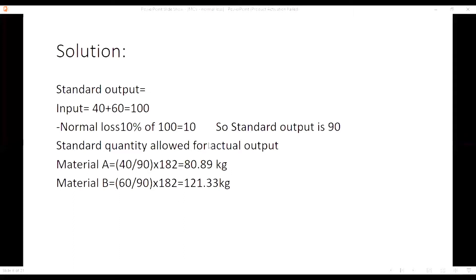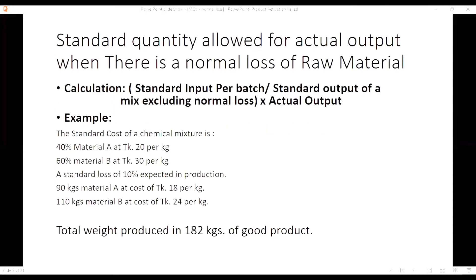The standard output of a mix was calculated by deducting the normal loss of 10, giving standard output of 90. So there is an impact of normal loss in this problem. If standard output is not given, then we have to calculate standard quantity allowed for actual output by deducting normal loss.